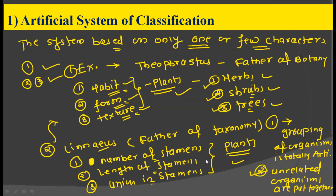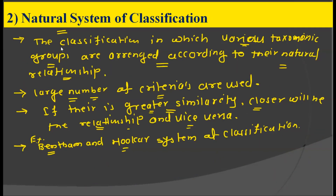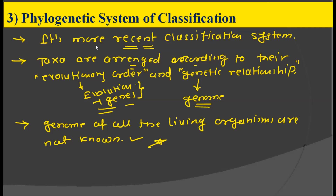Secondly, in the natural system of classification, various taxonomic groups are arranged according to their natural relationships, and a large number of characters are considered. If there is greater similarity, closer will be their relationship, and Bentham and Hooker is the prime example. Lastly, the phylogenetic system of classification is considered more recent due to highly developed technologies — taxa are arranged according to their evolutionary order and genetic relationship, but this system is still in its early form because the genome of all living organisms is yet to be known.